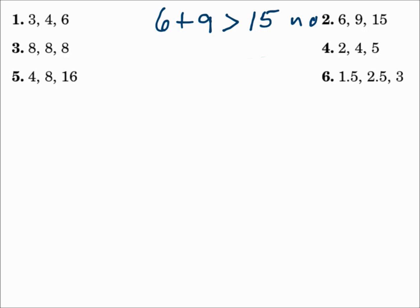Number 4: side lengths 2, 4, and 5. Is 2 plus 4 greater than 5? 6 is greater than 5. That's a yes — you can make a triangle.